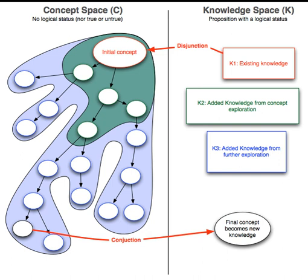Claims made for CK design theory include that it is the first design theory that offers a comprehensive formalization of design that is independent of any design domain or object, explains invention, creation, and discovery within the same framework and as design processes. The name of the theory is based on its central premises: the distinction between two spaces and operators.